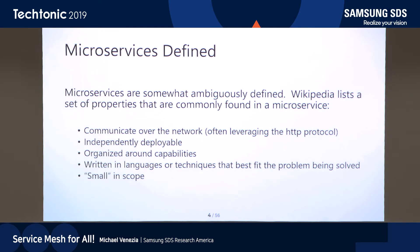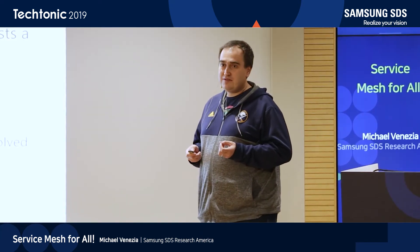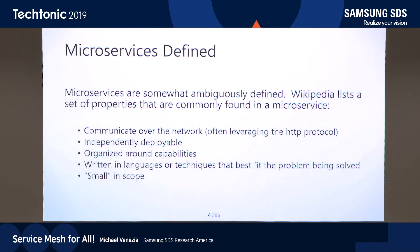Microservices are sometimes a little bit loosely or ambiguously defined. But generally speaking, we accept that a microservice will communicate with another service over the network. It will usually speak HTTP, but it doesn't always have to. Usually microservices are independently deployable. If you have an application that consists of a suite of microservices, each one may be versioned and deployed independently of each other. Usually they're organized around capabilities — like maybe one microservice handles logging, maybe another one talks to Facebook, maybe another one handles financial transactions.